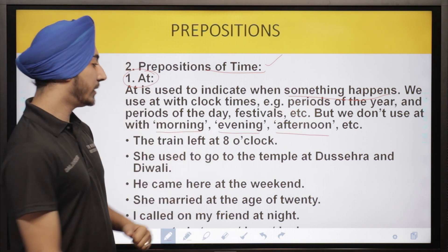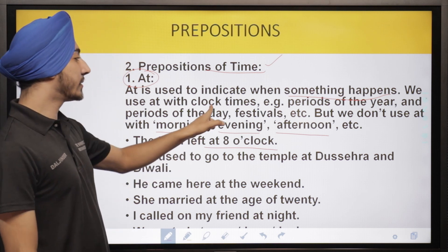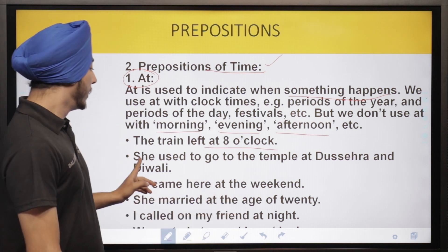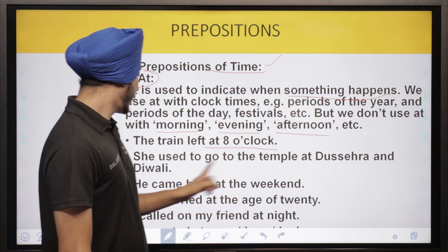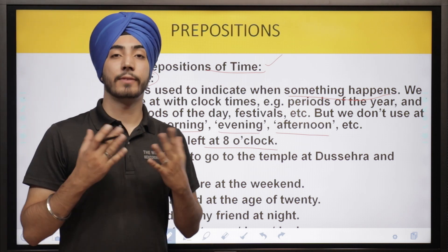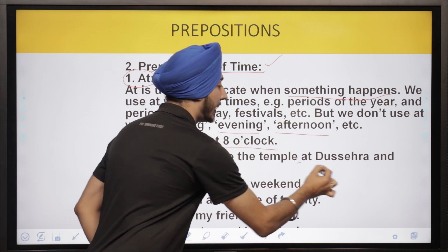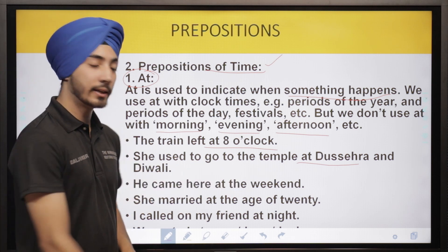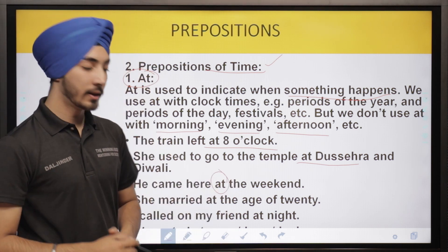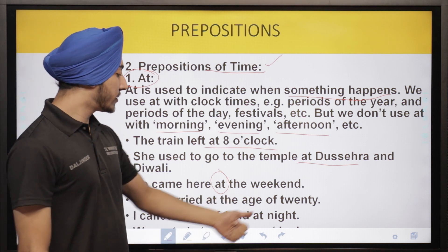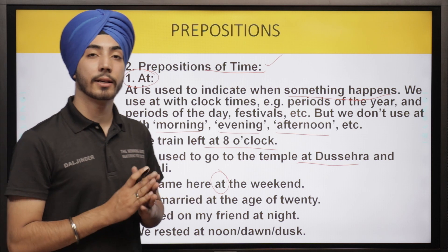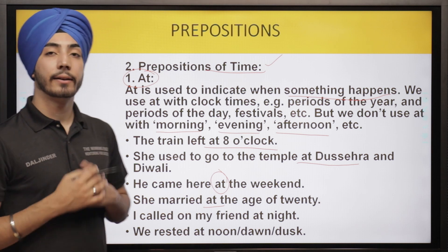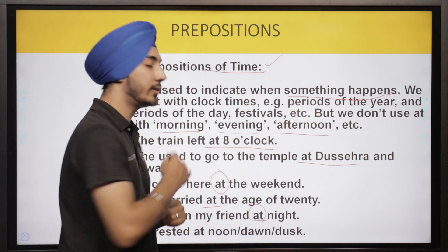'The train left at eight o'clock' — used with clock times. 'She used to go to the temple at Deshera and Diwali' — used with festivals. 'He came here at the weekend' — a period of time. 'She married at the age of twenty.' 'I called on my friend at night' — at day and at night we can also use this preposition.